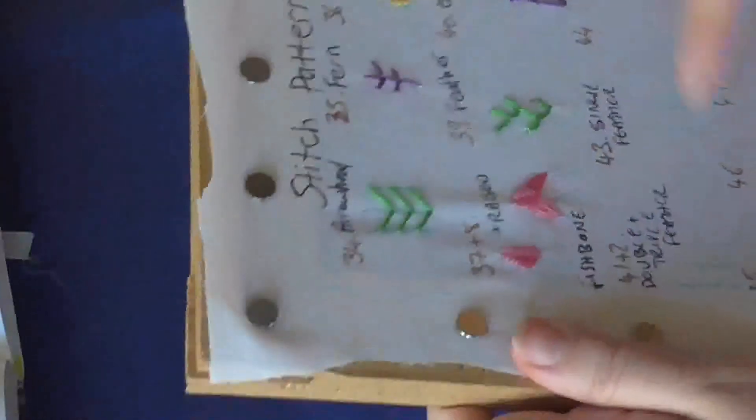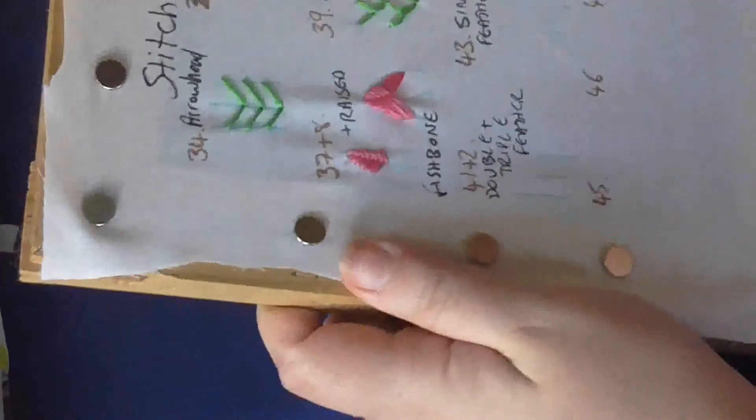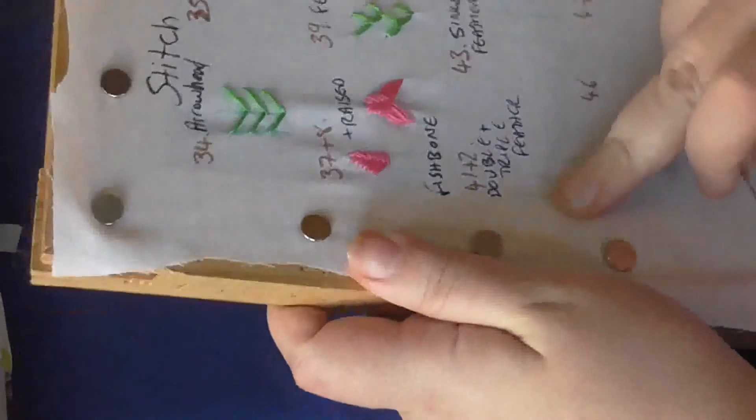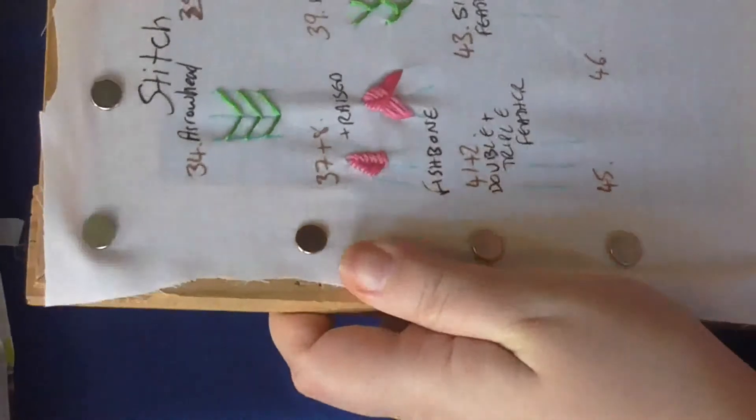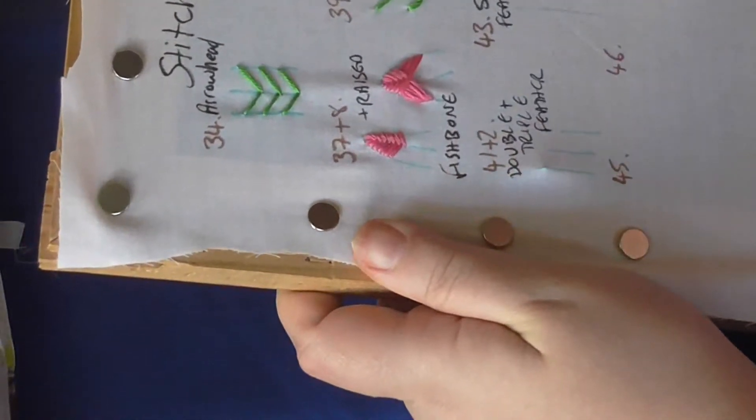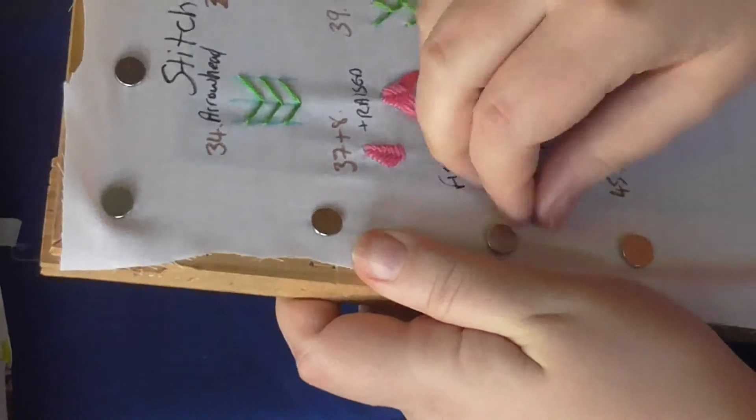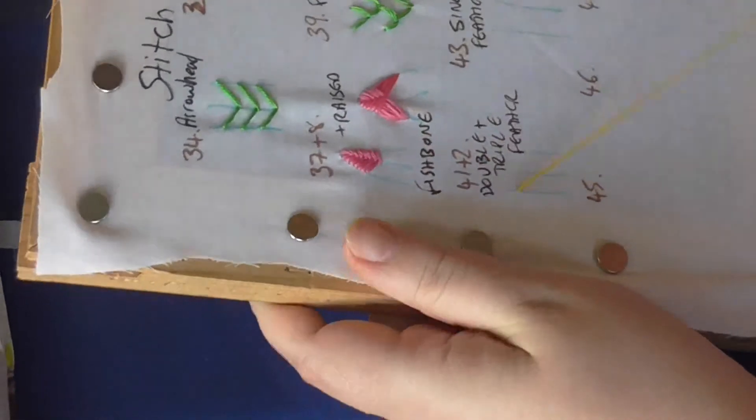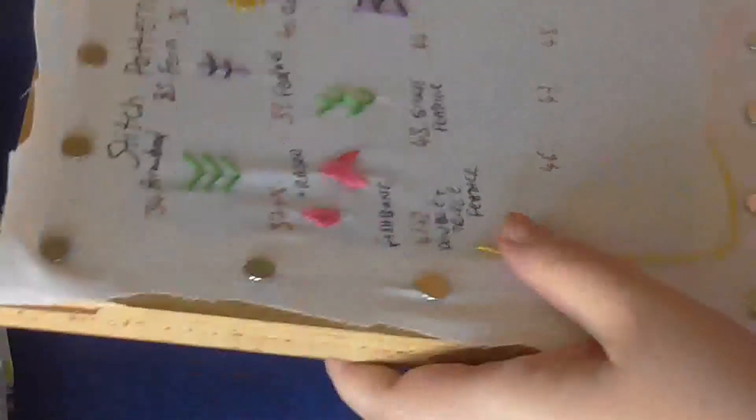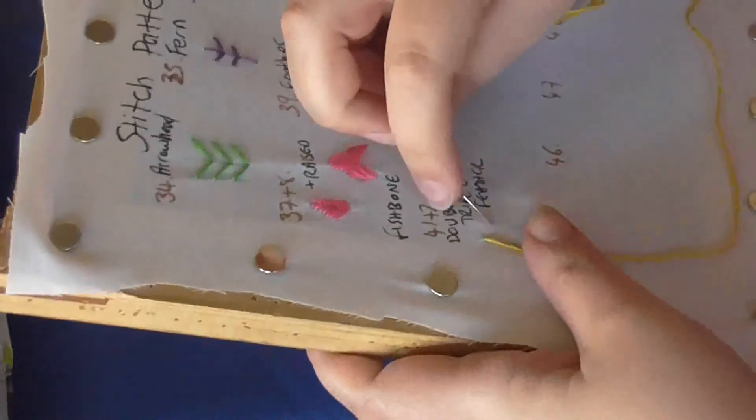Now moving on to a double and triple feather. So again, you'll find it handy to have two or three guidelines. You start off like a normal feather stitch on the same level.